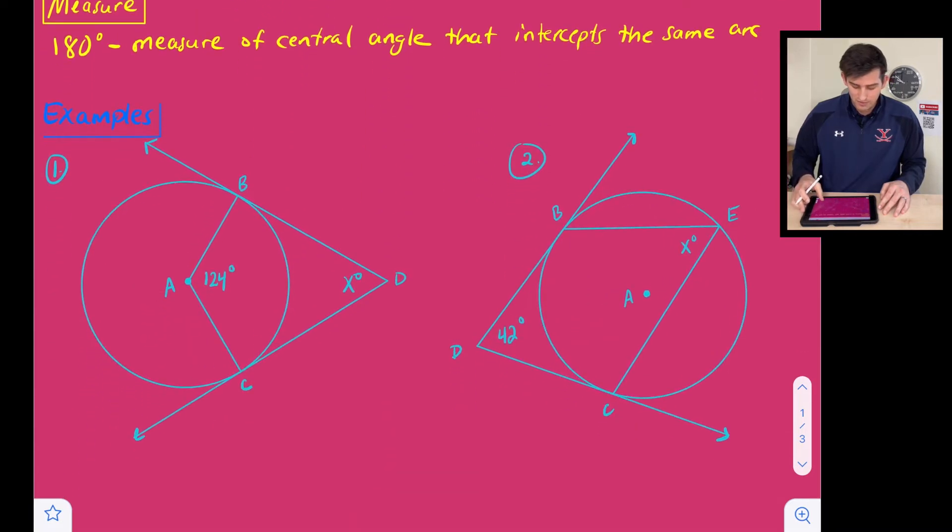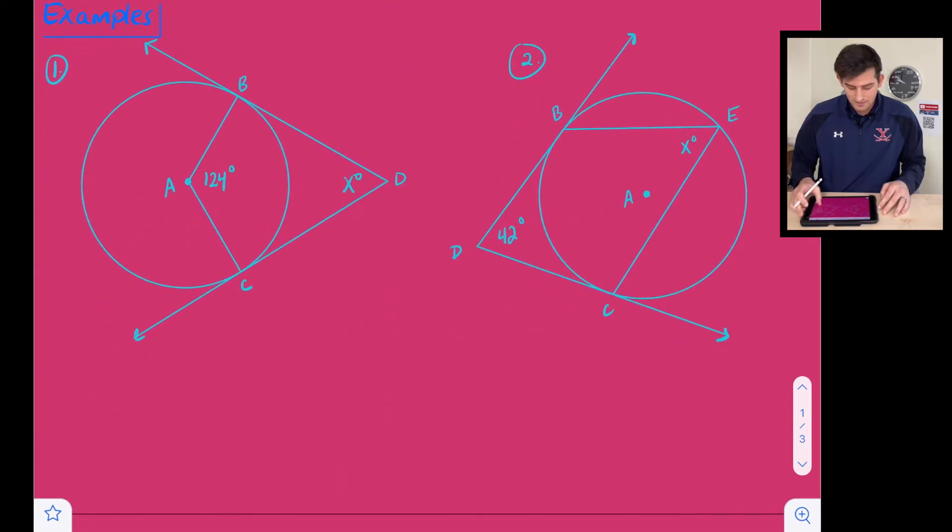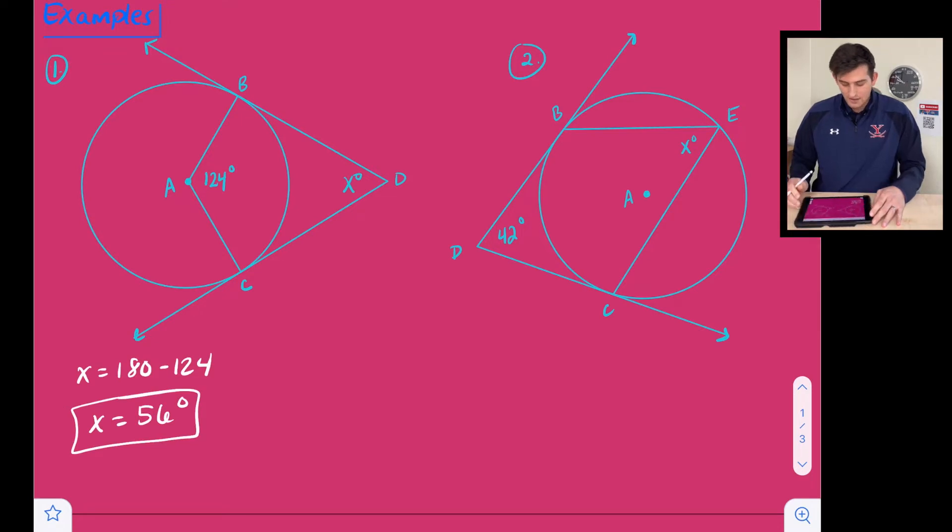All right, so let's look at some examples where we apply this theorem. For number one, very straightforward, we just want to find our X degrees that we have in our circumscribed angle. So for this one, we're just going to say X is equal to 180 minus 124, and we're going to get X is equal to 56 degrees.